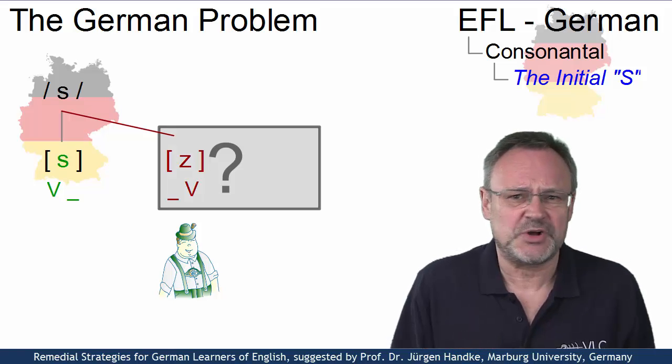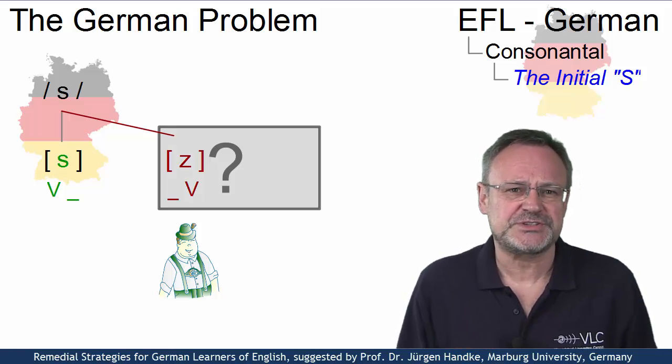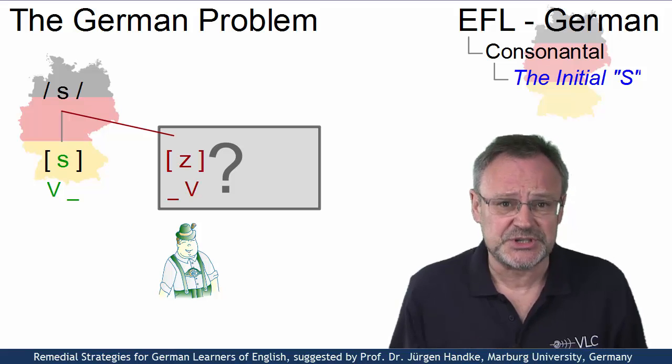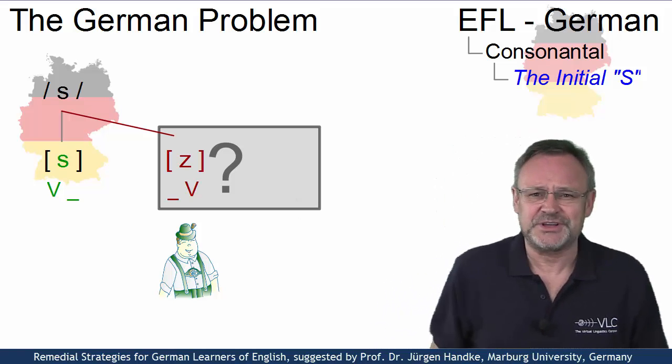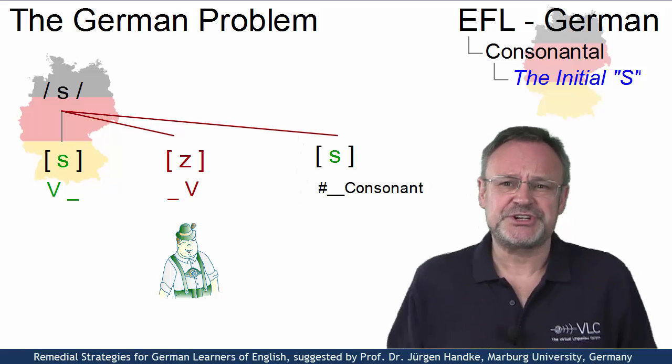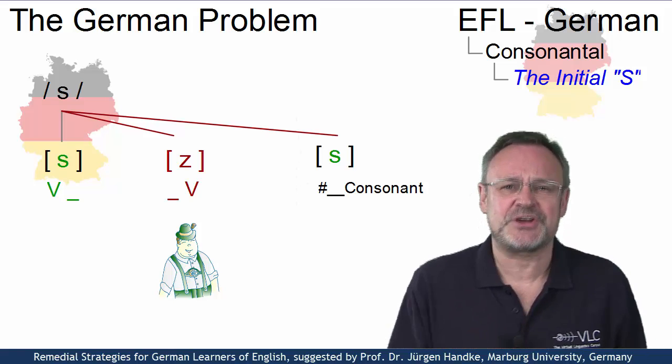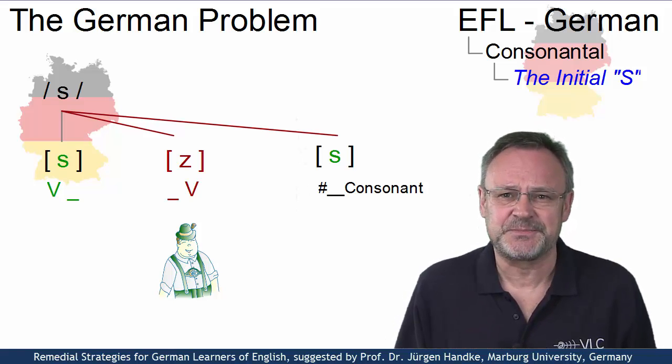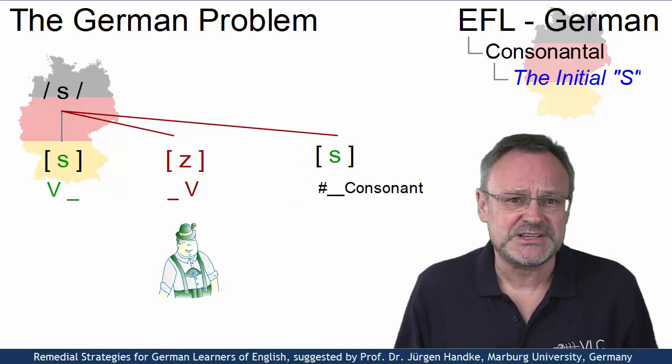How can we solve that problem and achieve a voiceless variant even in this position? Well, the trick is quite simple. We use those initial S contexts where even Germans use a voiceless S. And such contexts exist.